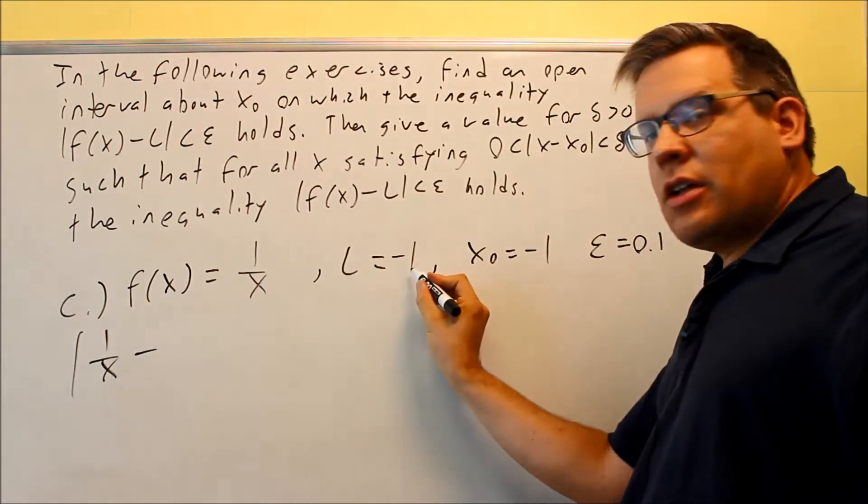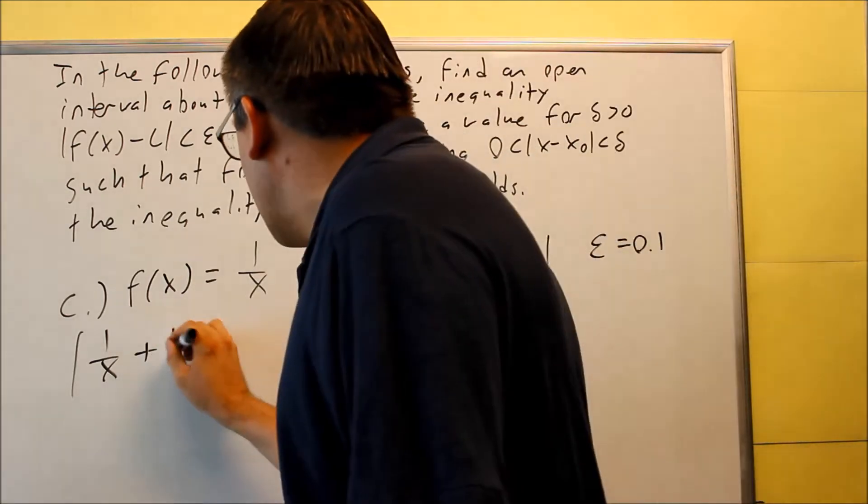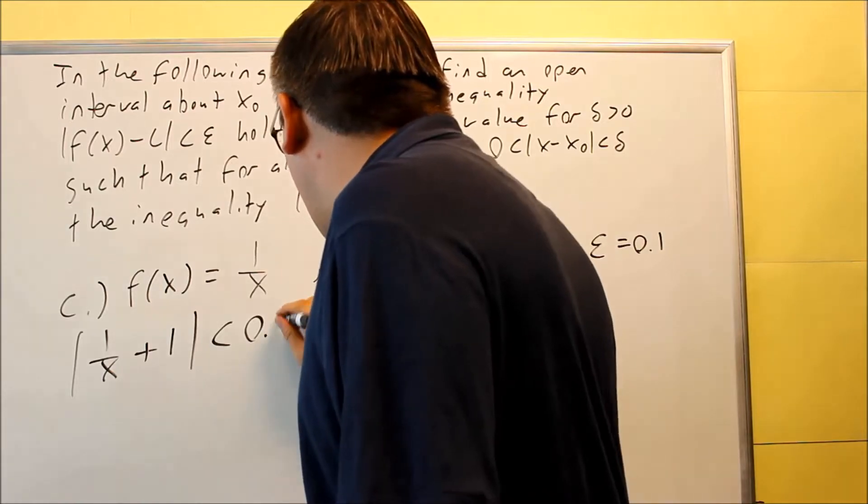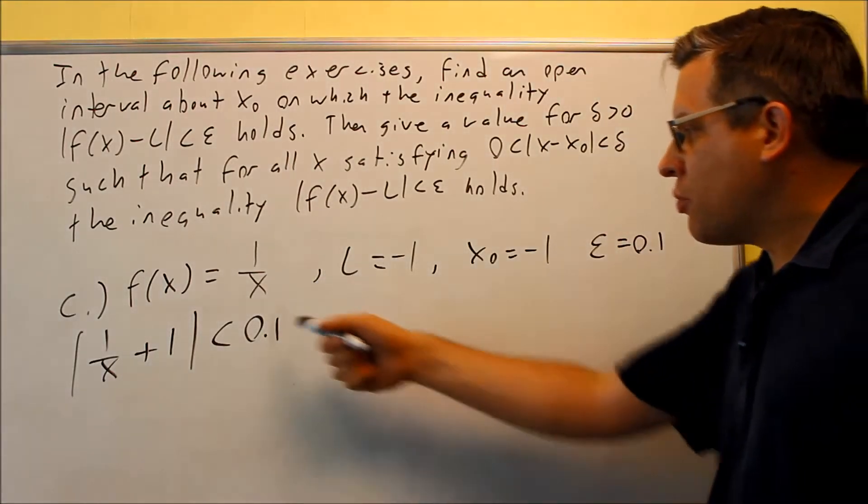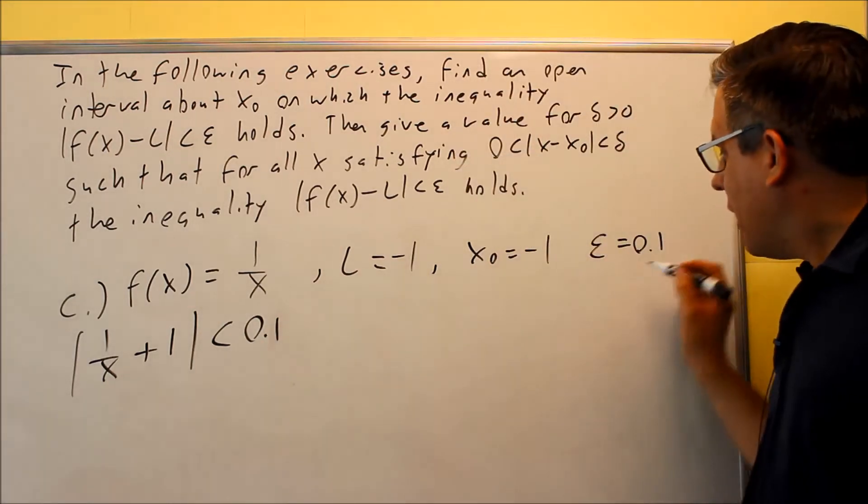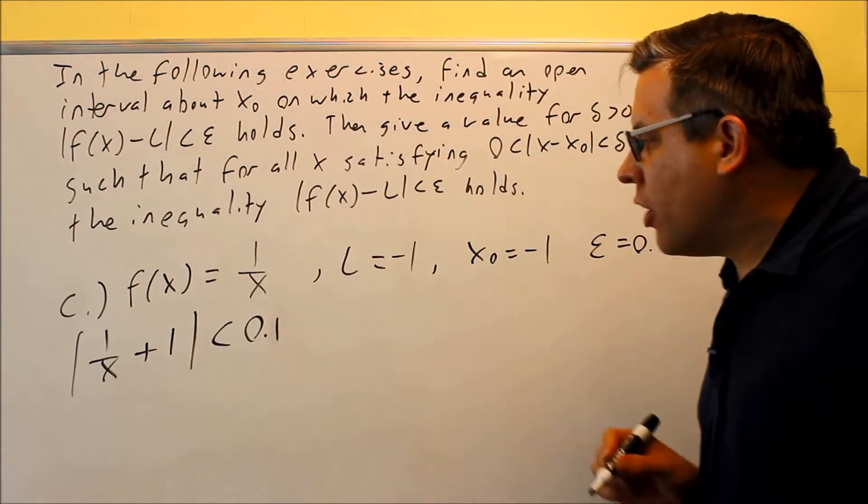and then minus L. We have minus negative 1 here, so that'll give us plus 1, and that's going to be less than our epsilon, which is 0.1 on this one. Just 0.1, not 0.01. So be careful when you write that, you don't want to accidentally put too many zeros in there.